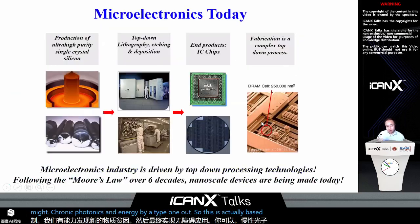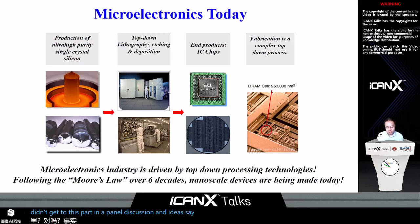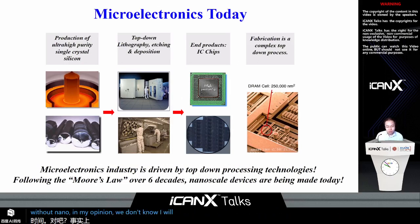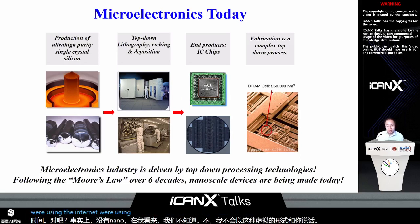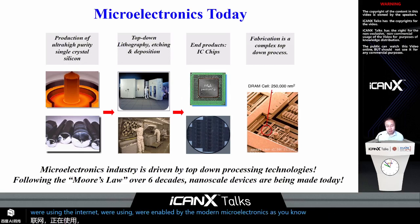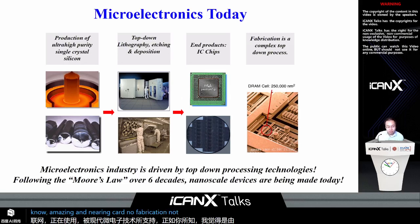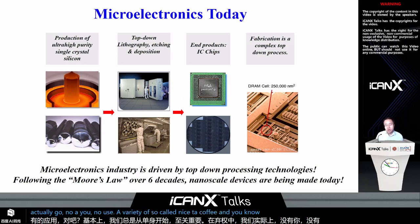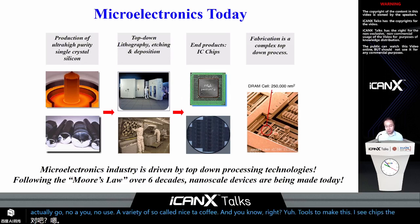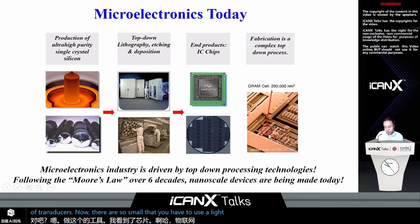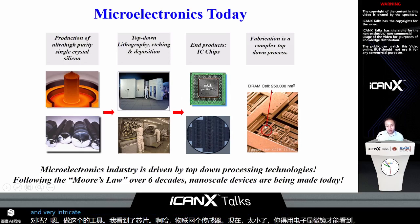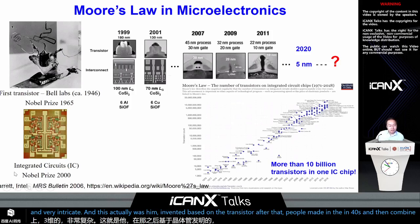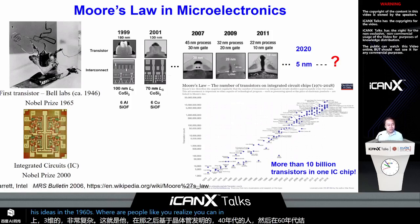Nano is with us the whole time. Without nano, I will not be speaking to you in this virtual format. The computers and internet we're using were enabled by modern microelectronics, which was enabled by nanofabrication. We start out with single crystalline wafers and use lithography and various tools to make IC chips with a lot of transistors — so small you have to use an electron microscope to see their structure. This was invented based on transistors made in the 1940s, combined with integrated circuit ideas from the 1960s.